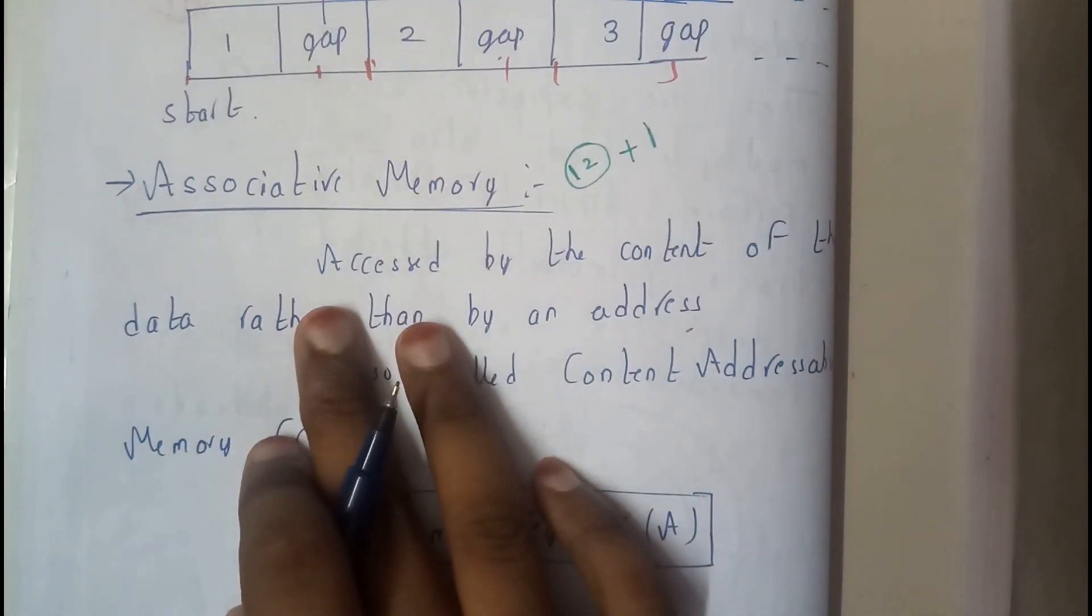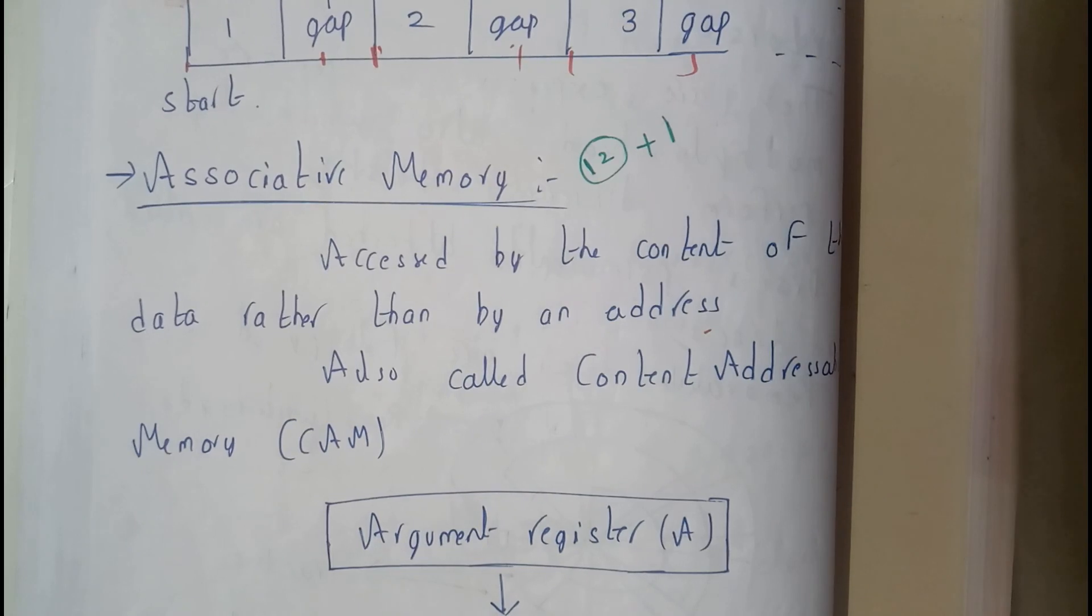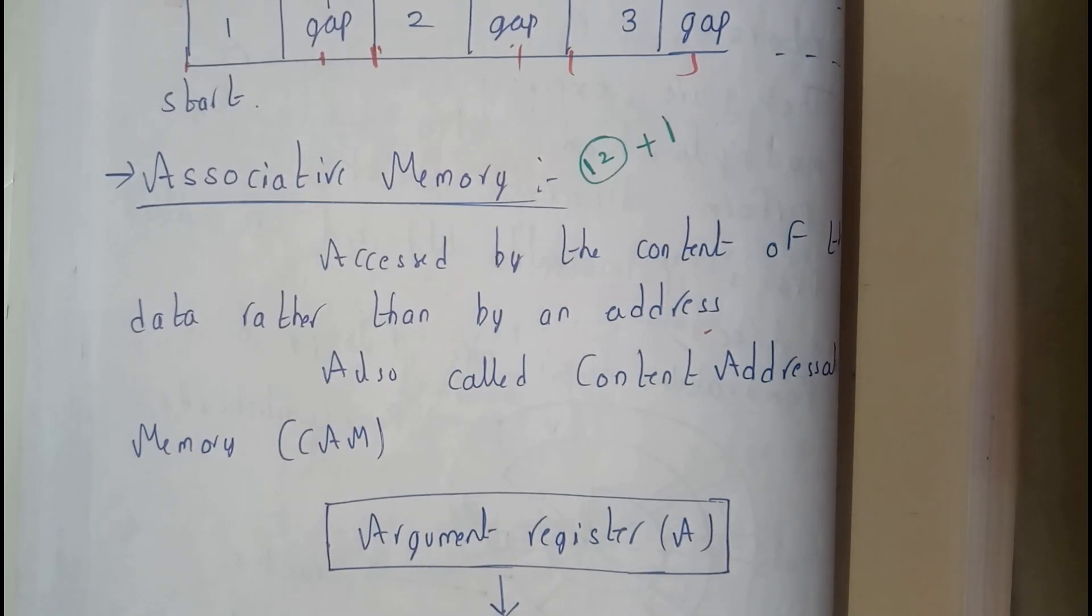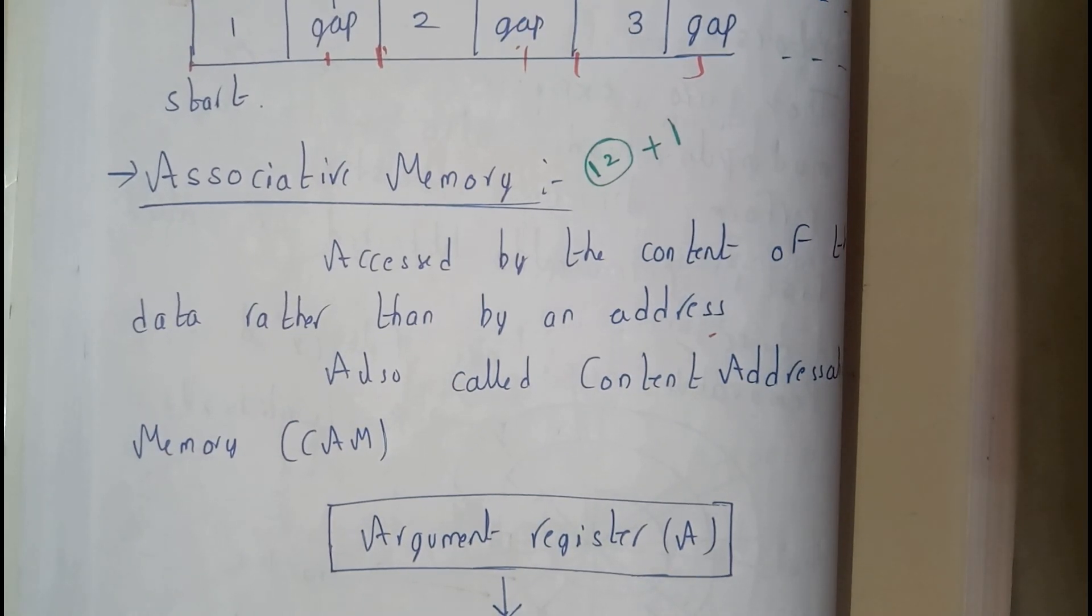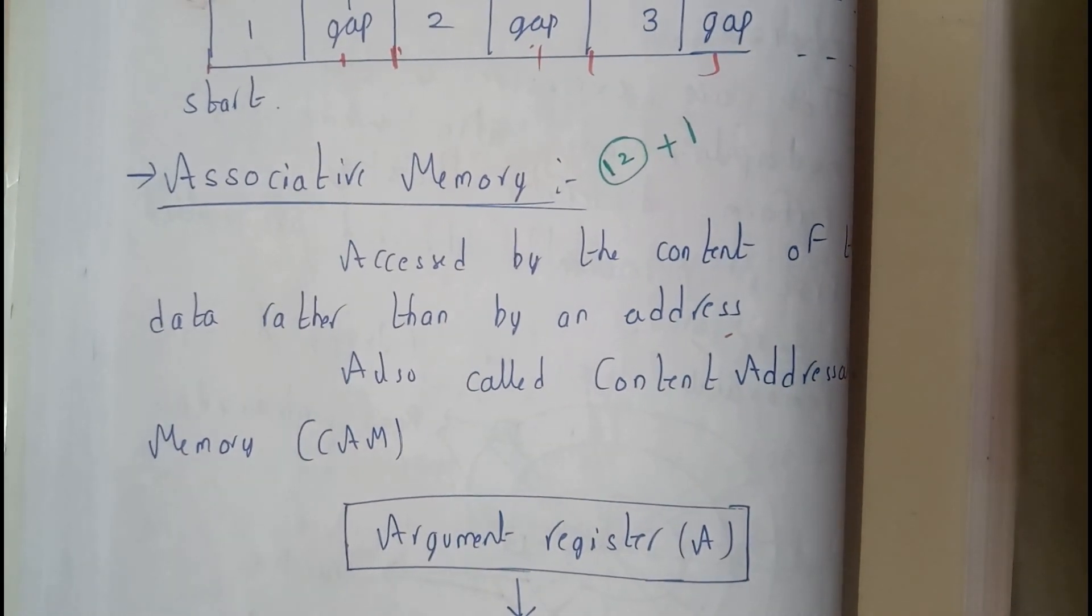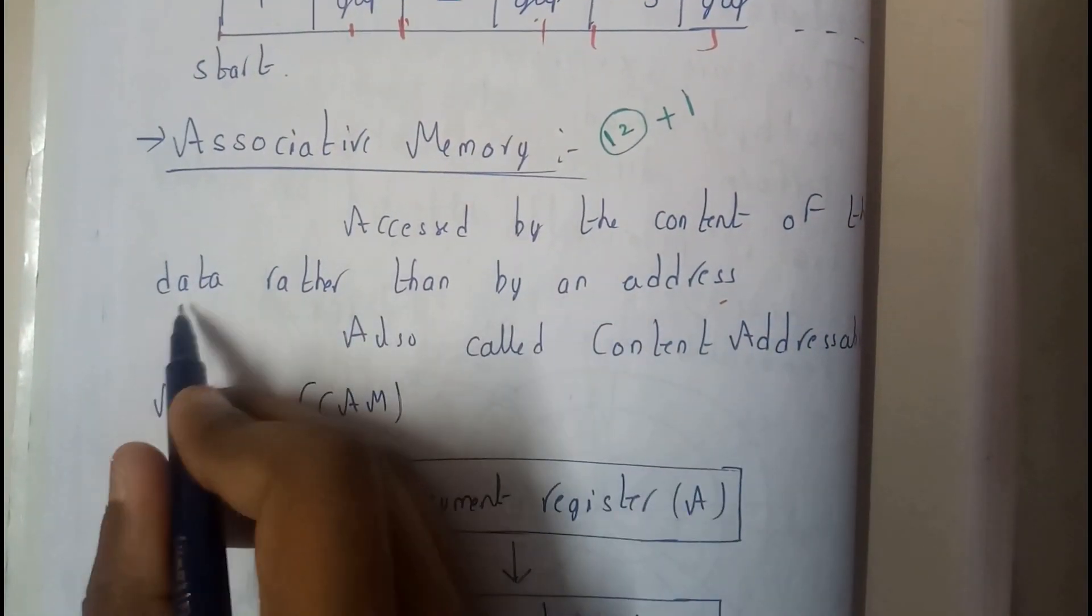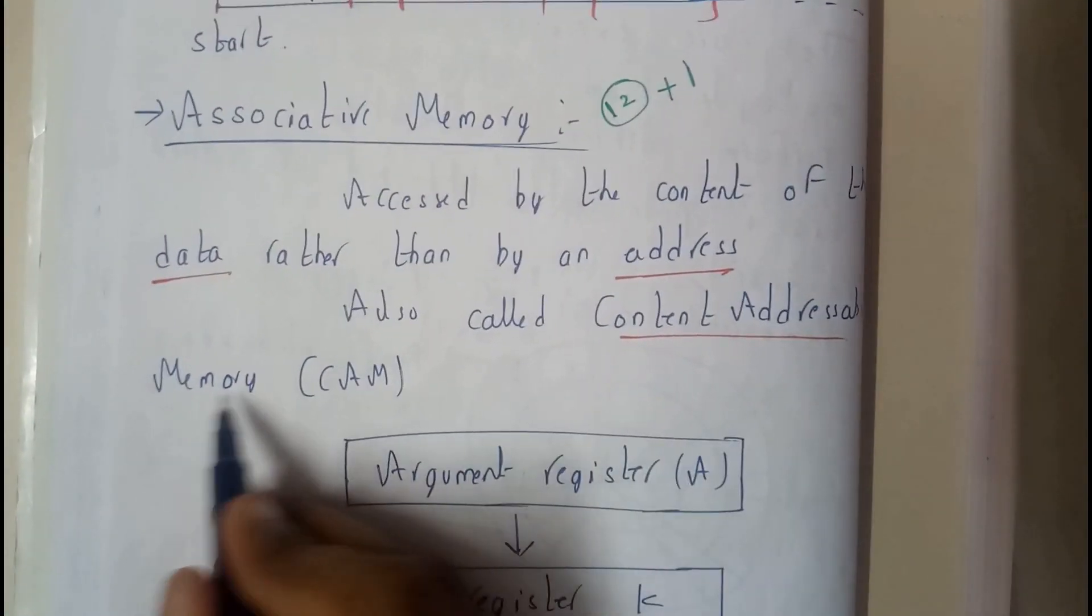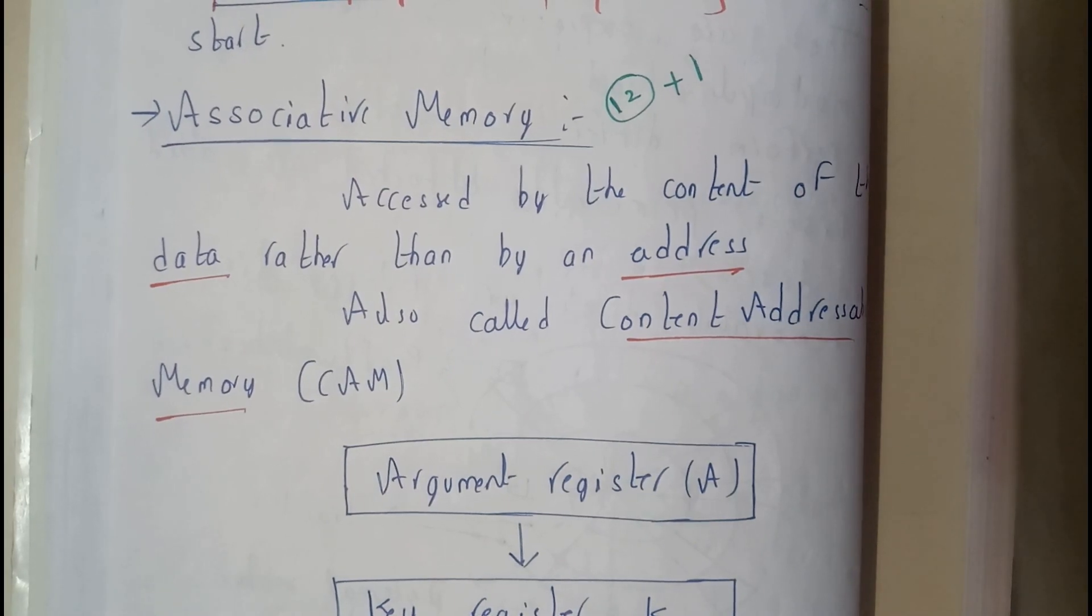So, associative memory. Associative memory is basically how we will be searching for data. If you want to search something, we will be going according to address, right? But in associative mapping, we will be going according to the value or the data. It is accessing the content of the data rather than address. It is also known as content addressable memory, that is CAM.